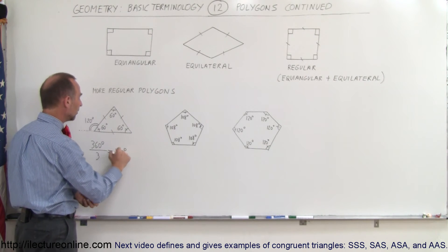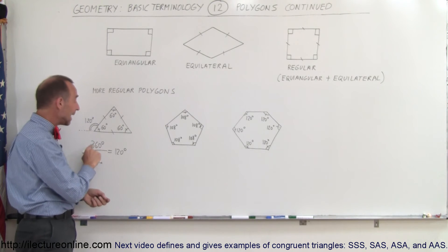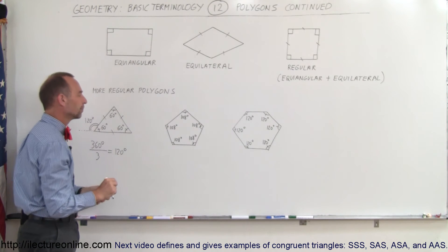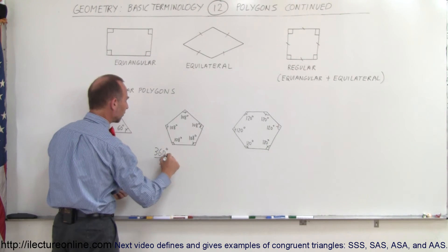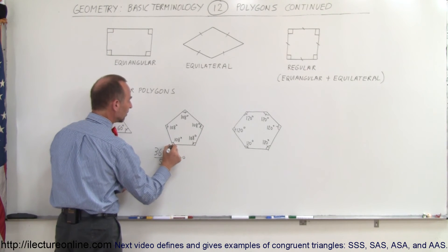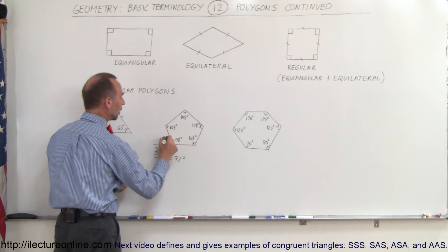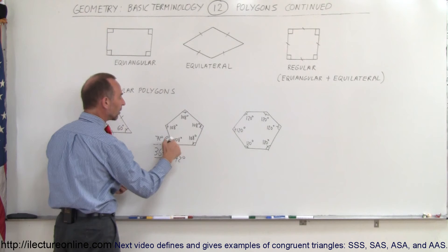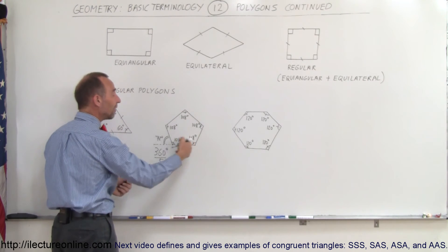That gives 120 degrees, and therefore you subtract 120 degrees from 180 and you get the interior angles. Let's try it for a pentagon — we take 360 degrees and divide it by five, which gives us 72 degrees. That means if we extend one of the line segments, the supplementary angle is 72 degrees, which means the interior angle has to be 180 minus 72, giving 108 degrees, so therefore all five angles are 108 degrees.